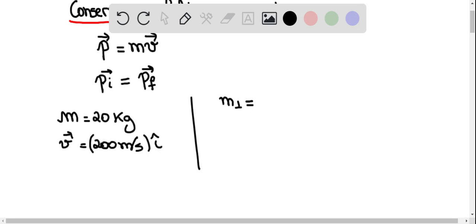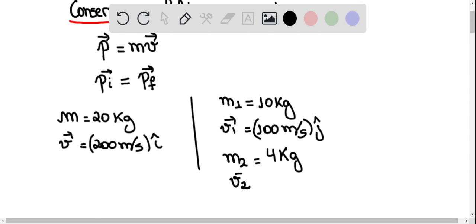The first part has a mass of 10 kilograms, and moves with a velocity v1 of 100 meters per second in the positive y direction. So I have to multiply it by j. m2, the second mass, is 4 kilograms, and moves with a velocity of minus 500 meters per second in the i direction.